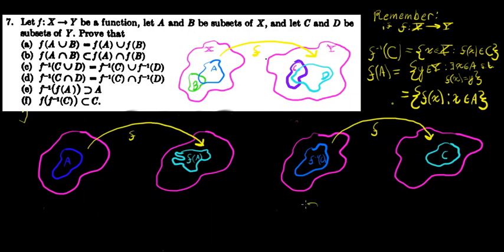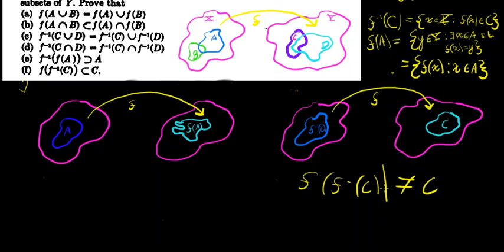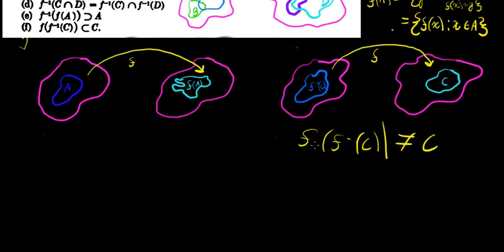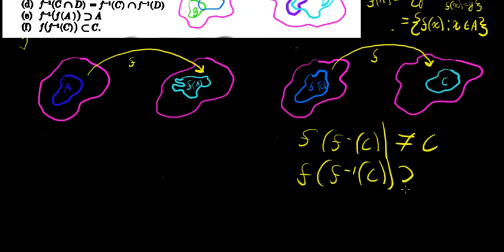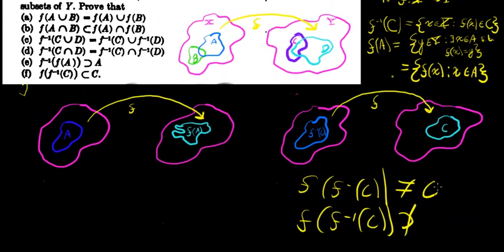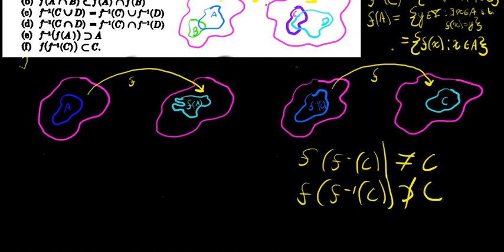We're also going to prove that f of the inverse image of C is not equal to C. And to do that, we're going to show that f of the inverse image of C does not contain C — that is to say, C is not a subset of the image of the inverse image of C. So let's first prove what problem 7f in Introduction to Analysis by Rosenlicht is asking us, in the set theory chapter.